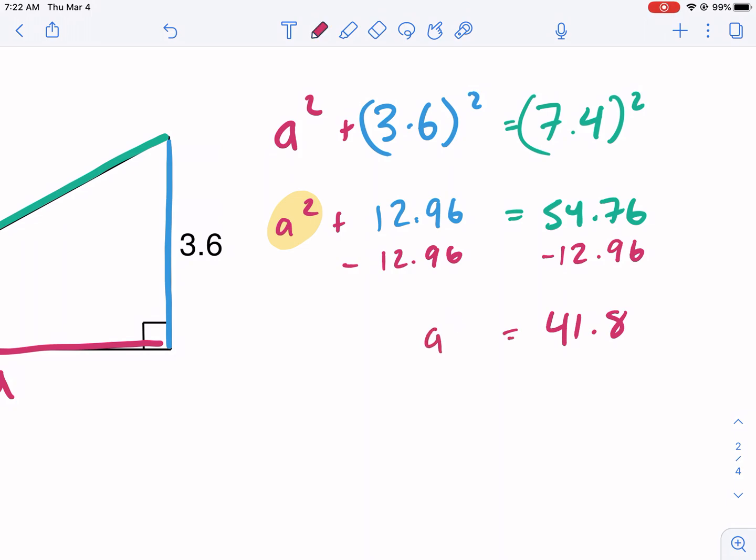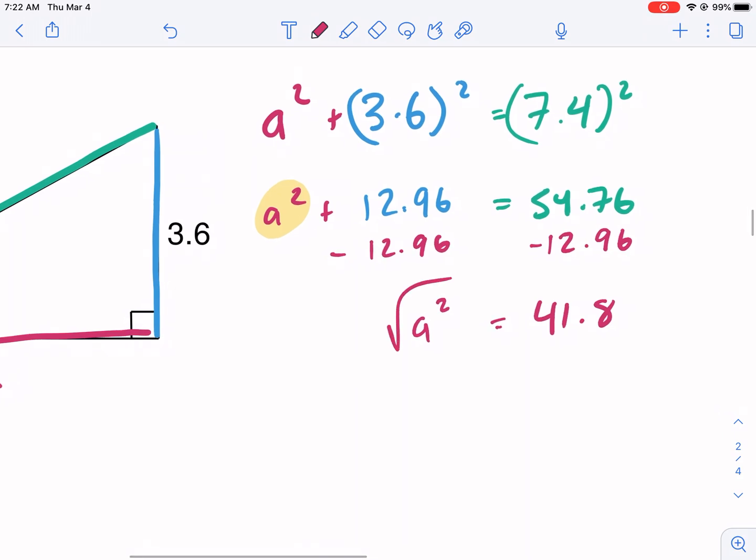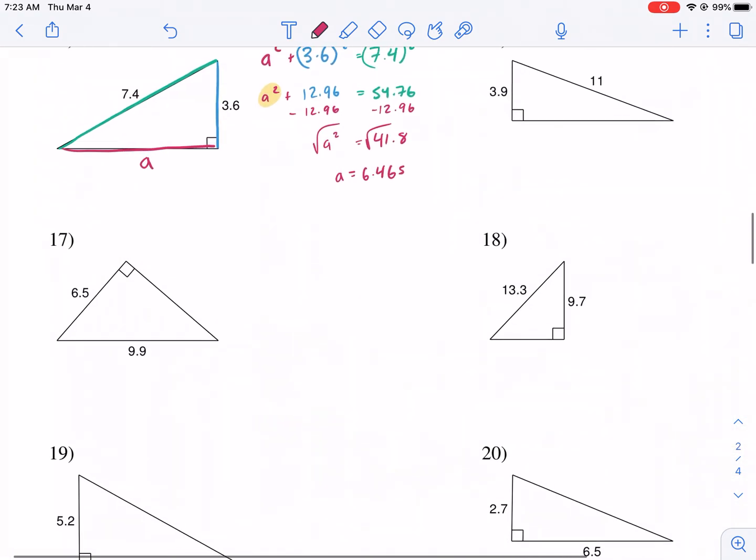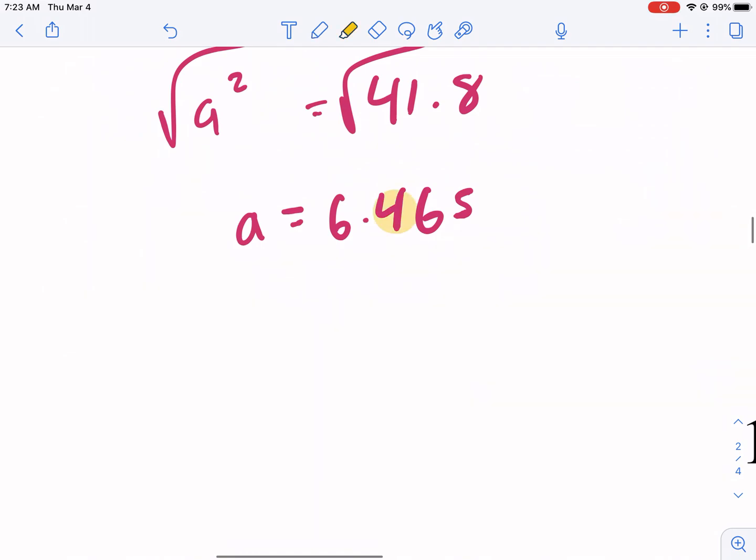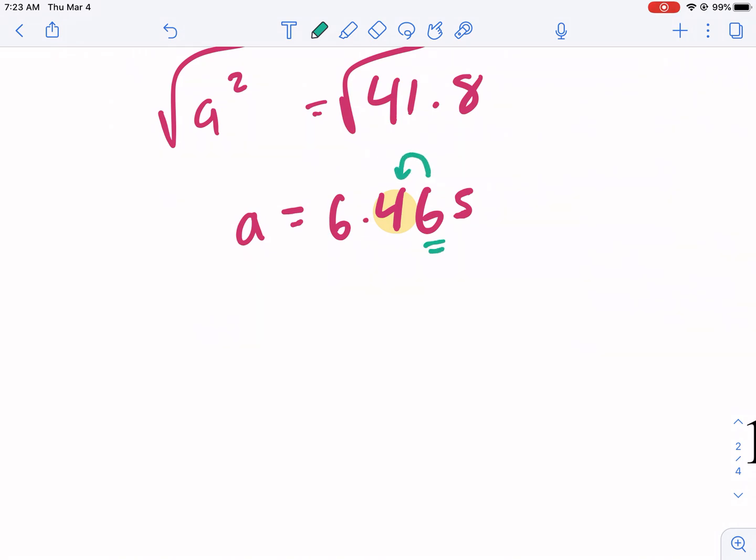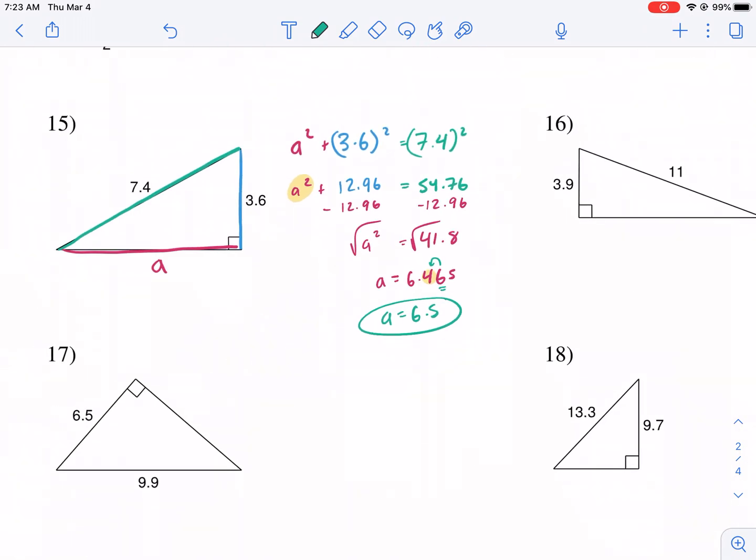And we get 41.8 equals A squared. That was a rough two. What do we do from here? We take the square root. So this is easy when we have a calculator nearby. 41.8 raised to the 0.5 power. We get A equals 6.465. Now, it asks us to round here. What does it ask us to round to? The nearest tenth. So if you have trouble with rounding, first identify your tenth. It's 4. Now identify the number next to the tenth. It's 6. The 6 tells the 4 to go up. So A equals 6.5. And there's our answer. A equals 6.5.